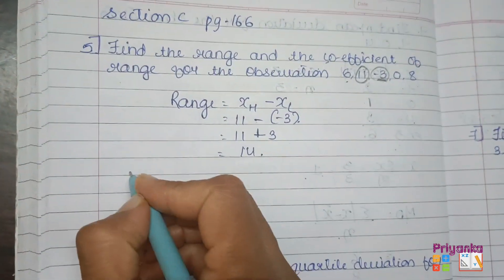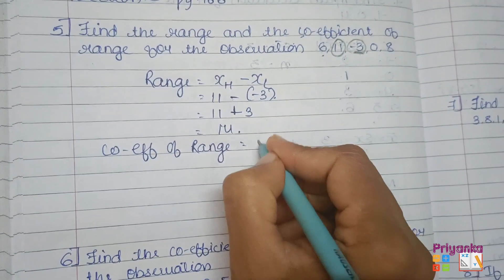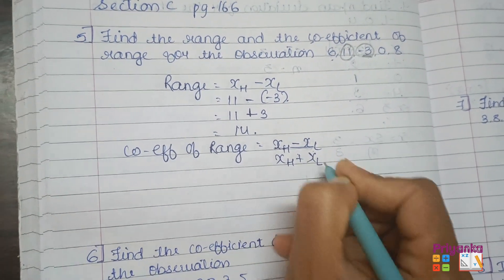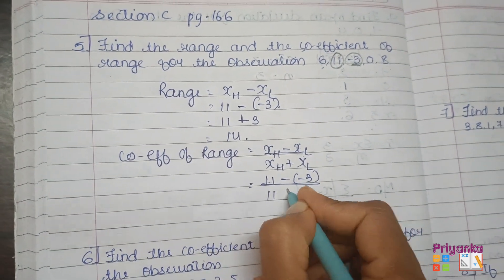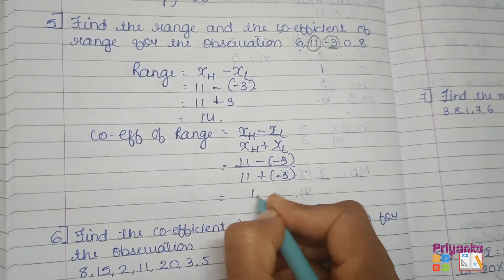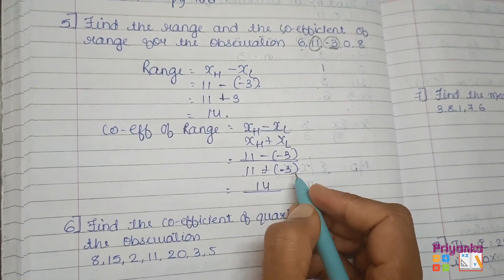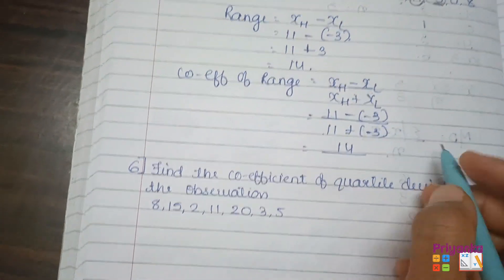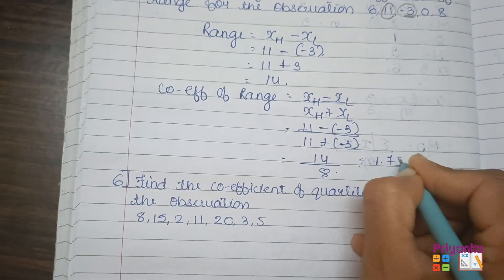Now finding the coefficient of range. The formula is: (highest - lowest) divided by (highest + lowest). So (11 - (-3)) divided by (11 + (-3)) = 14 divided by 8 = 1.75. The coefficient of range is 1.75.